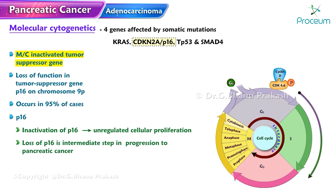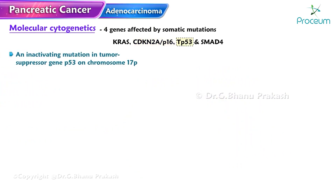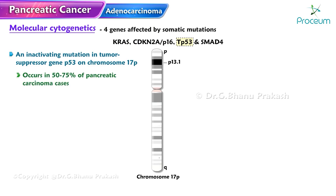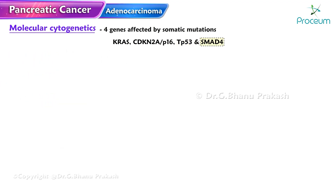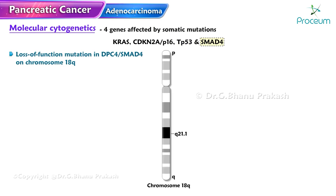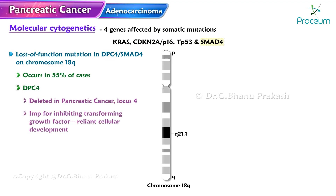An inactivating mutation in the tumor suppressor gene TP53 on chromosome 17p occurs in 50 to 75% of pancreatic carcinoma cases and is considered a late-stage mutation. A loss of function mutation in DPC4 (SMAD4) on chromosome 18q occurs in approximately 55% of cases. DPC4, conveniently named 'deleted in pancreatic cancer locus 4,' is important for inhibiting TGF-beta-reliant cellular development, so its inactivation causes unregulated progression through the cell cycle.